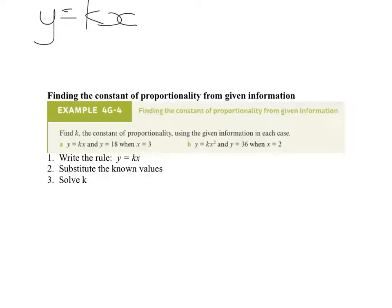So, we know that y is 18, so we go 18 is equal to, we know that k, we don't know what that is, is times by whatever x is, and x is 3.